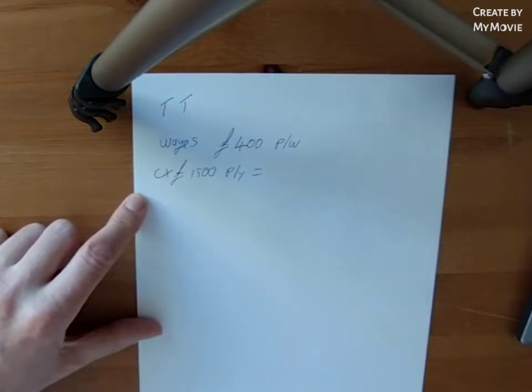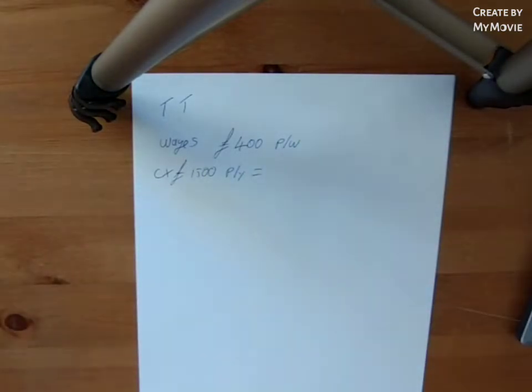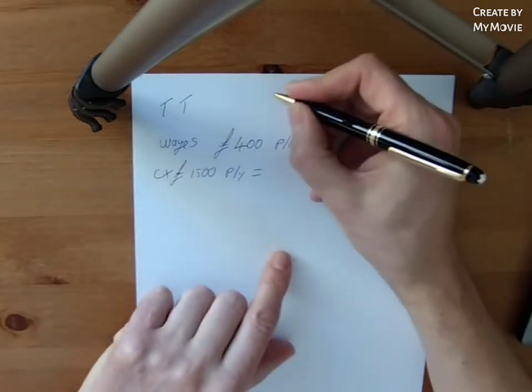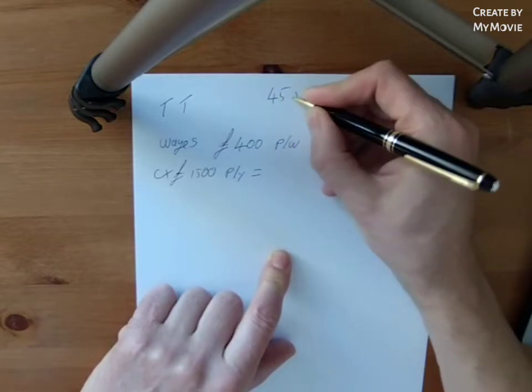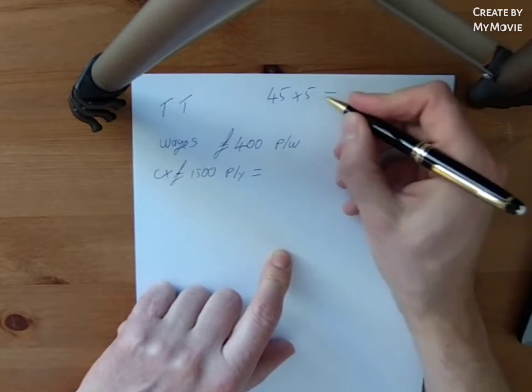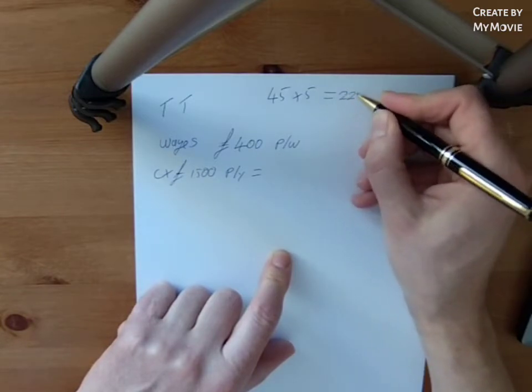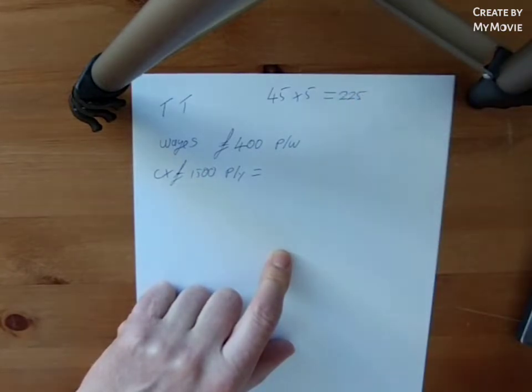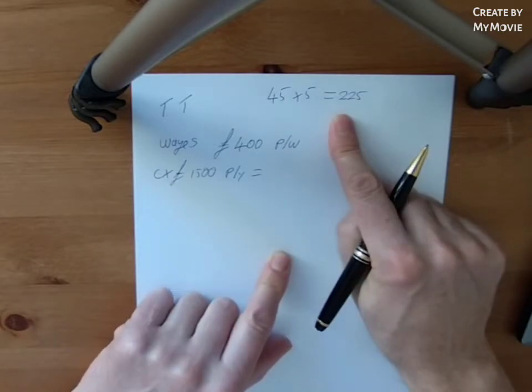Now, the important thing here is how many weeks are you going to run in a year? Are you going to run 52 weeks? Are you going to work 45 weeks? If we take 45 weeks as a reasonably good example, so if we take 45 times 5, that's how many days we're going to run. That gives us 225 days. So everything we do, we need to divide by 225.